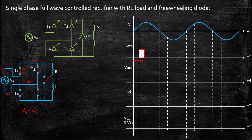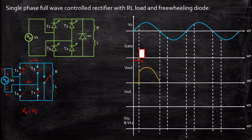The output voltage waveform starts at zero because initially T1, T2, T3, T4 are not fired and not given a gate pulse. As a result the output voltage is equal to zero. When we trigger at alpha, T1 and T2 are turned on and Vout equals Vs, so the waveform starts following the supply voltage waveform from the instant the firing angle is applied. This firing is because of T1 and T2.